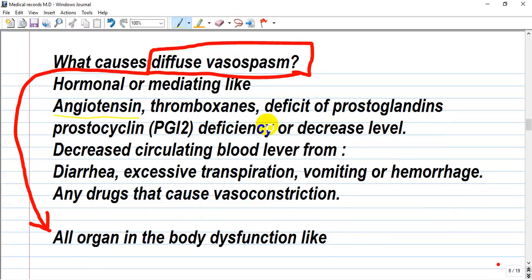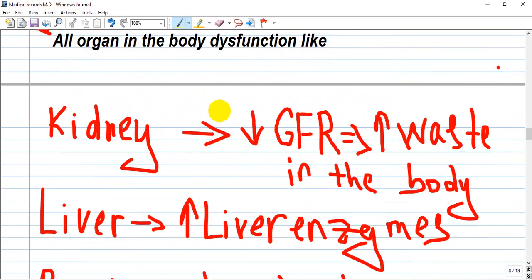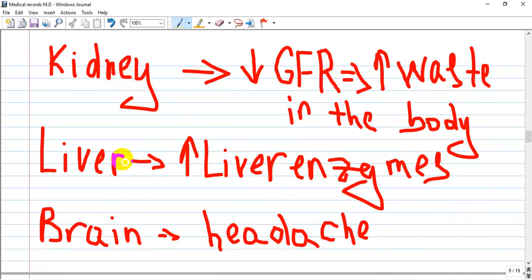As I told you, initially occurs a local vasospasm and after it becomes generalized. The kidneys will suffer because of decreased glomerular filtration rate from increased glomerular vasoconstriction, increasing waste retention in the body. Usually in pregnancy, women lose all the wastes because of increased glomerular filtration and you can see blood urea nitrogen and creatinine decreased.